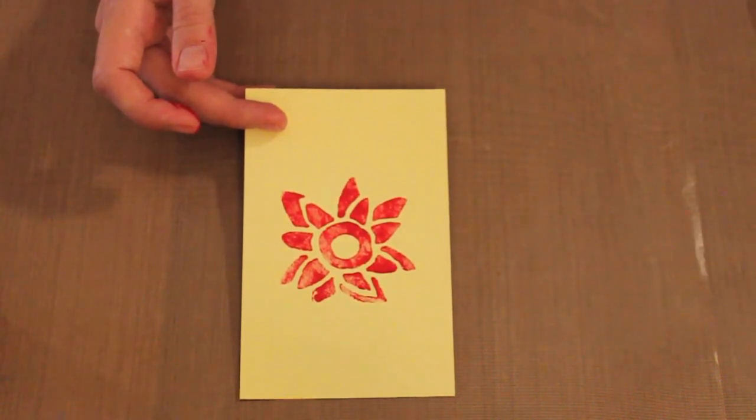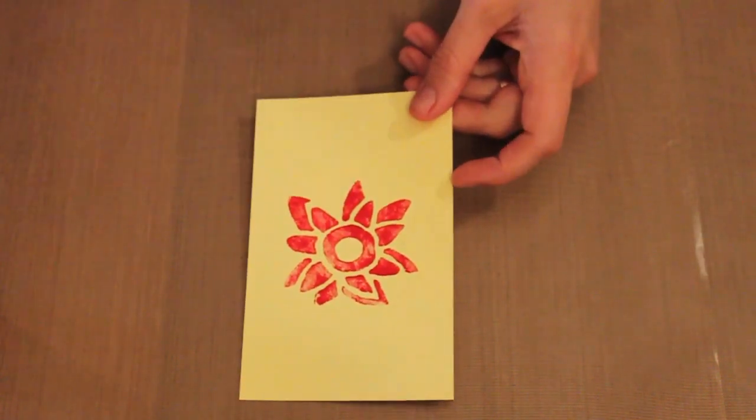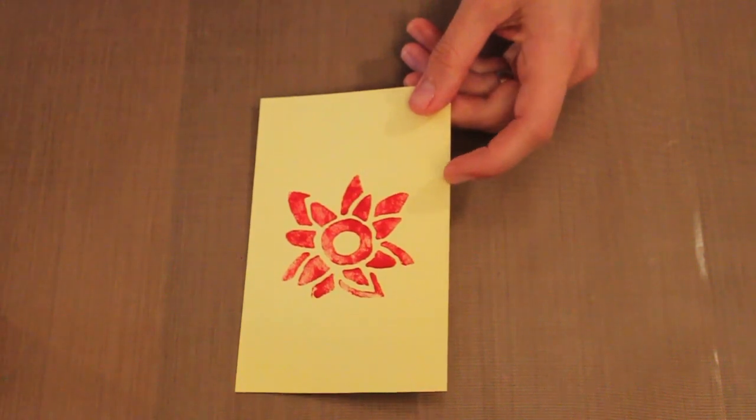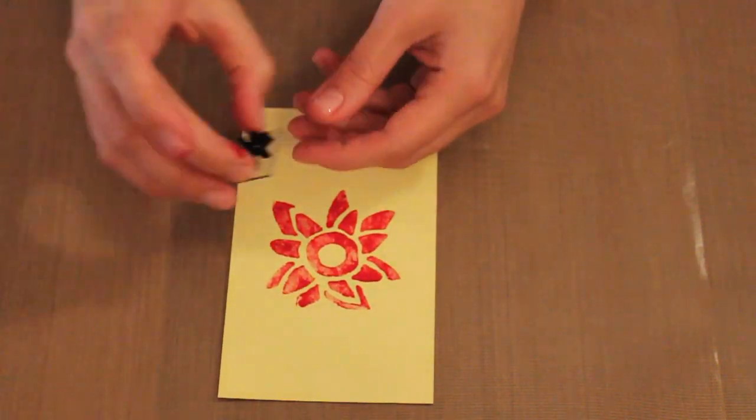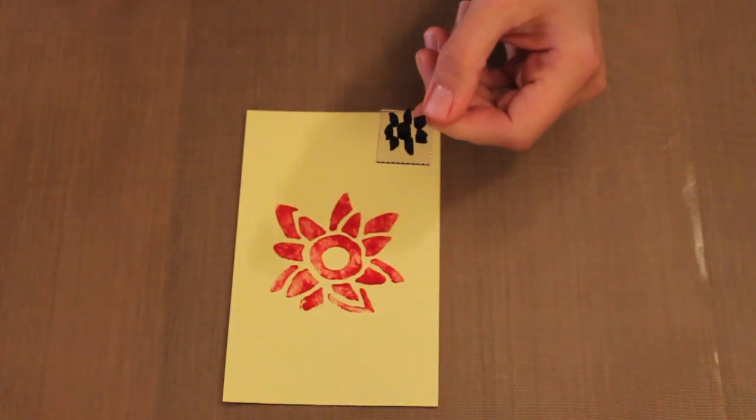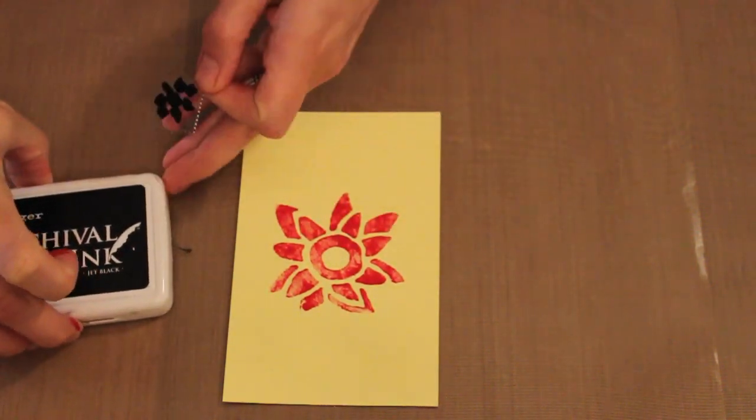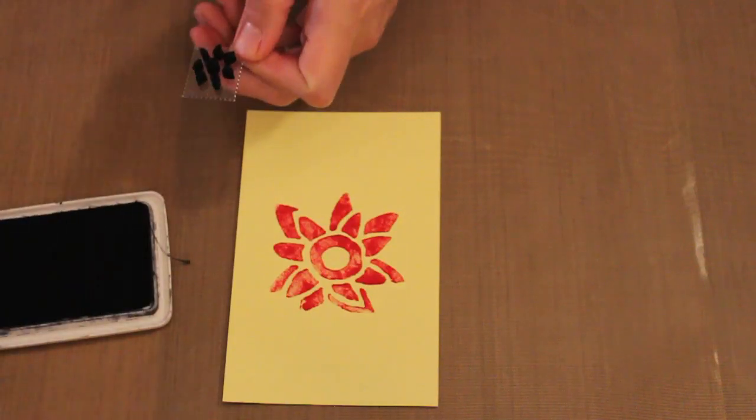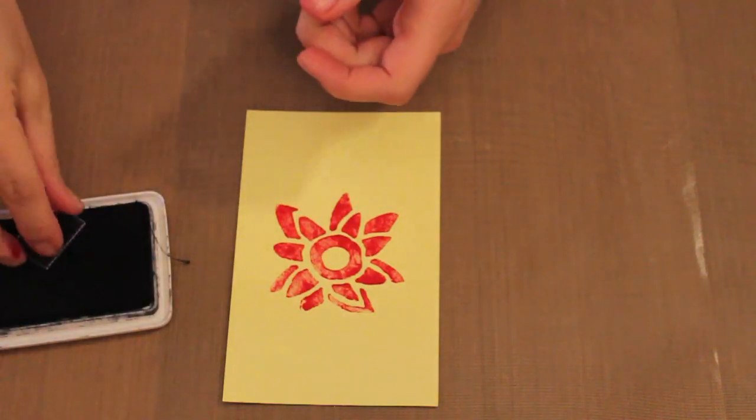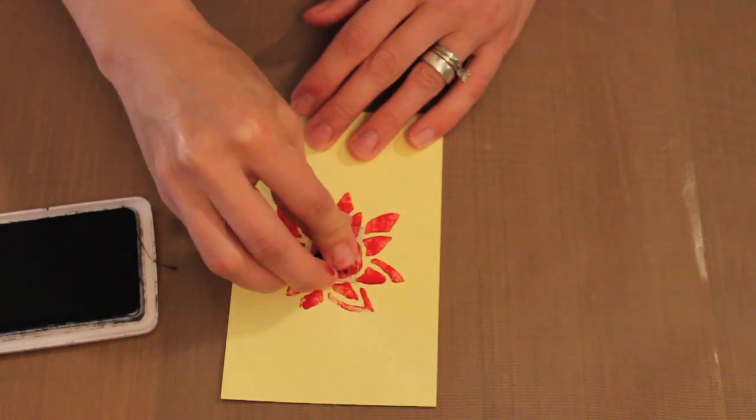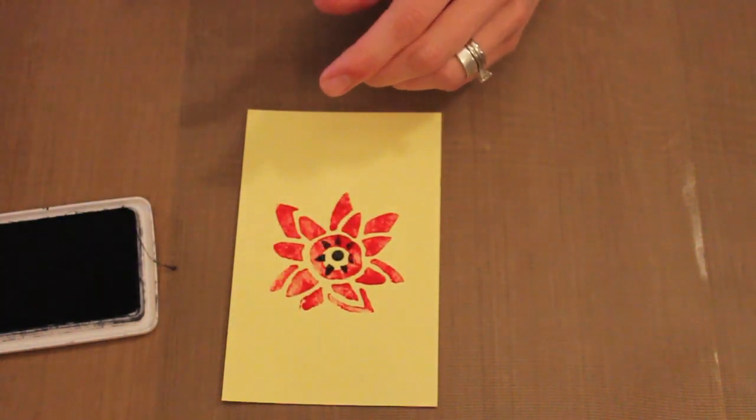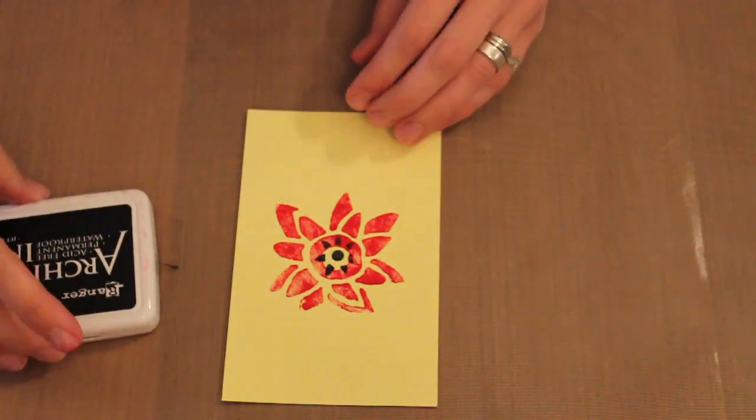I also wanted to add the inside of my flower, so that's another stamp, this little dot part. I'm going to take some Archival Jet Black archival ink and ink this up and then simply press it into the center. That's how easy it is to make the focal part of my card.